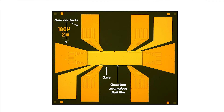When I cooled this device close to absolute zero, about negative 273 degrees centigrade, and sent a current from left to right, I indeed measured a voltage from top to bottom corresponding to 25 kOhms.